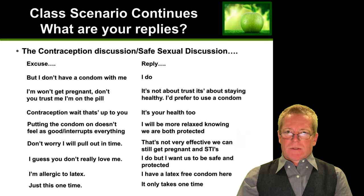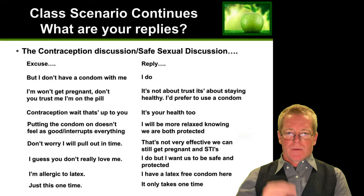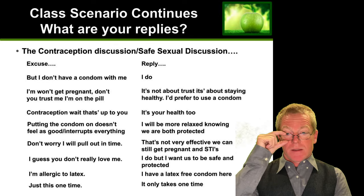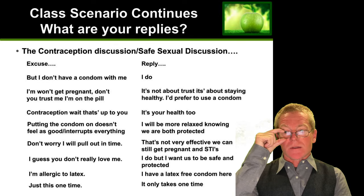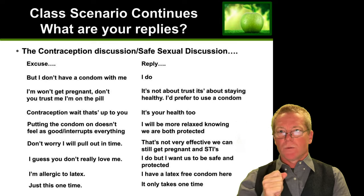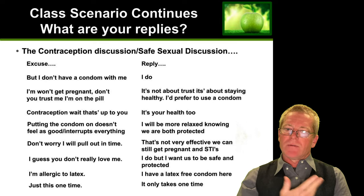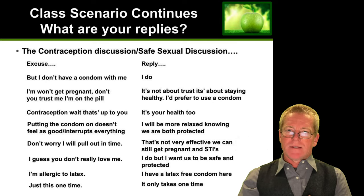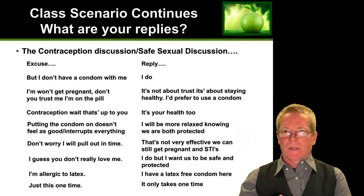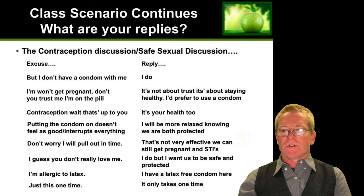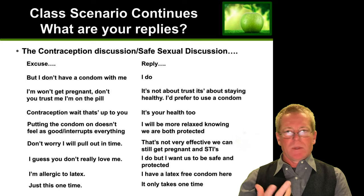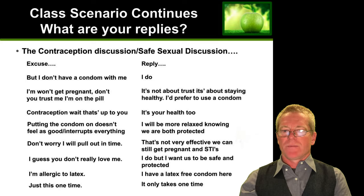Some of the sorts of things you might hear during those discussions are excuses. Things like, 'I don't have a condom with me.' It's a good idea to have replies, like, 'Well, I do plan ahead.' Another excuse: 'I won't get pregnant, trust me, I'm on the pill.' A good reply: 'It's not about trust. It's about staying healthy. I prefer to use a condom.'